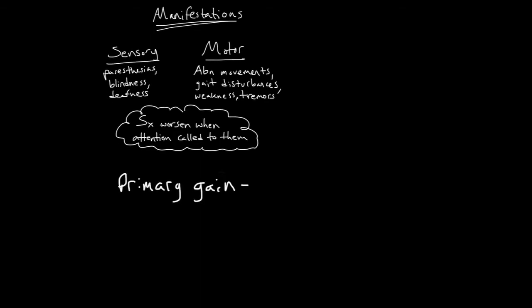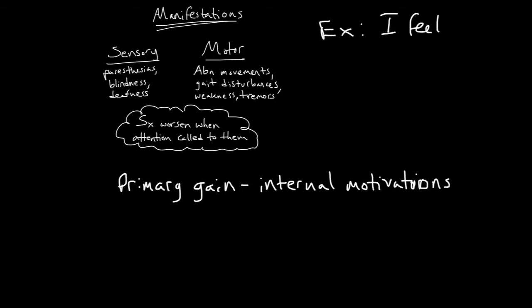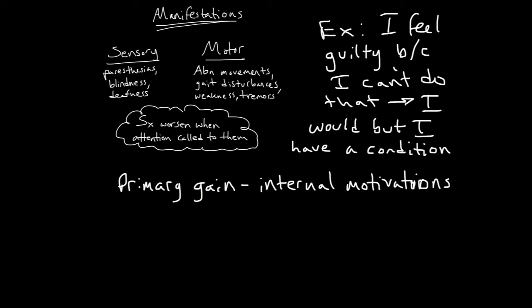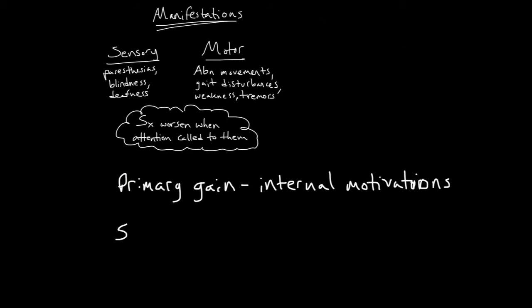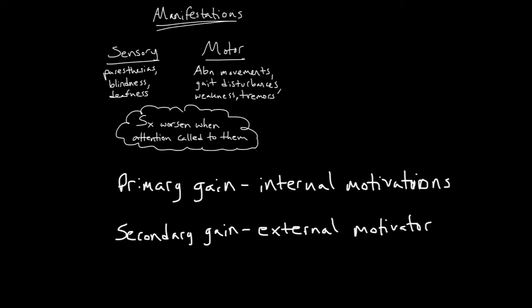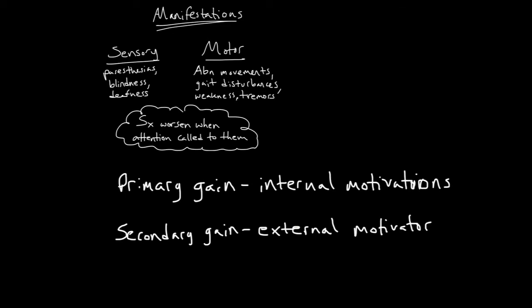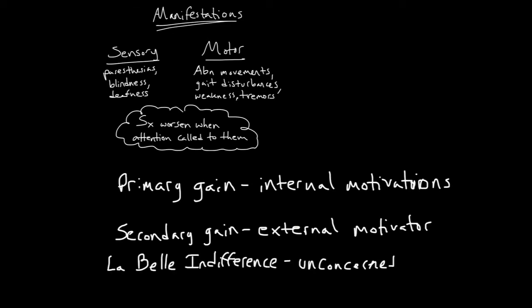Primary gain is used by keeping internal conflicts outside awareness. For instance, the individual may feel guilty about being unable to perform a task and convert this into the expression, 'I would, but I have a condition.' Primary gain is related to internal motivations. In secondary gain, patients accrue tangible advantages and benefits as a result of getting sick. This allows them to get excused from obligations and difficult life situations. Secondary gain is externally motivated. In la belle indifférence, the individual appears unconcerned about serious symptoms. These are all things that you may see in conversion disorder.